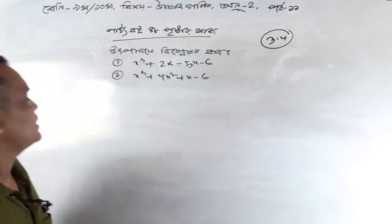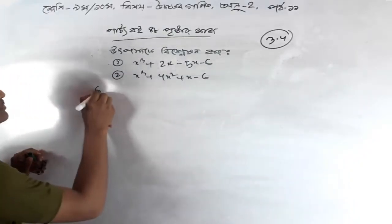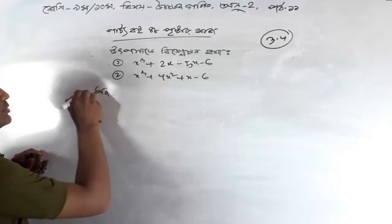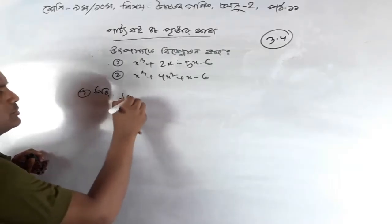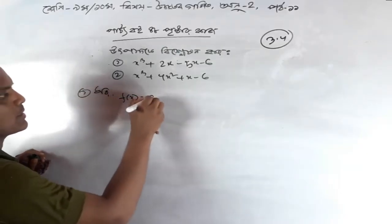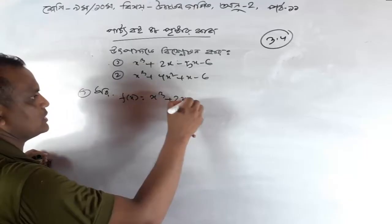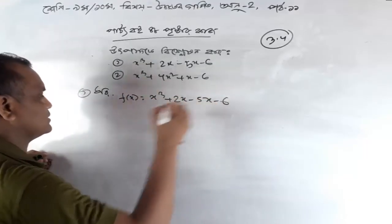How do we work? The primary number is next. One fourth of x is 0. x cubed plus 2x minus 5x minus 4, minus 6.